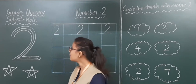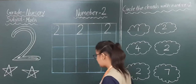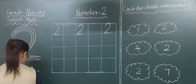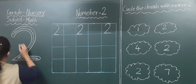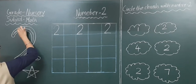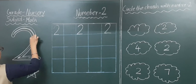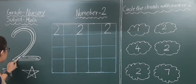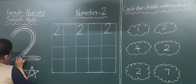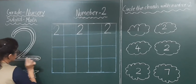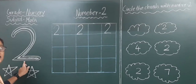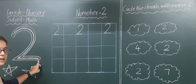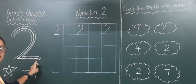So now we will continue with how to write number 2. First of all I have to make one curve line, and then at the end of this curve line I have to make one sleeping line. Number 2 — curve line and then one sleeping line.